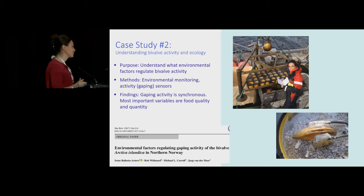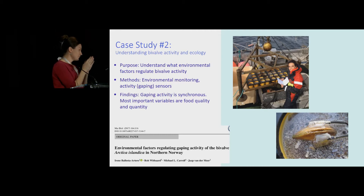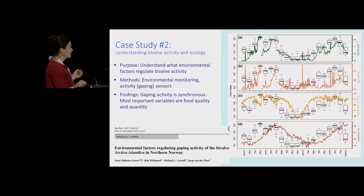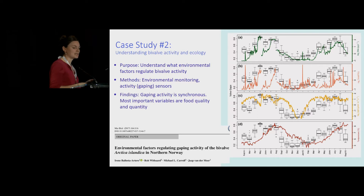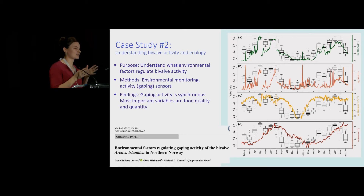The second case study comes from the same location in far northern Norway. These are ecologists and biologists seeking to understand what controls bivalve activity in the environment. They attached electrode sensors to each valve of a shell to monitor their gaping activity — how they're opening and closing. They attached these sensors to many shells, put them each in a little cup, and loaded them onto a benthic lander also equipped with a myriad of other environmental sensors. They measured gaping and the environment for a period of several years. The main findings are that gaping is very synchronous within the population — they're all behaving the same way throughout the year — and they're responding mostly to food quality and quantity. The next step is to tie this gaping activity with shell growth rates.